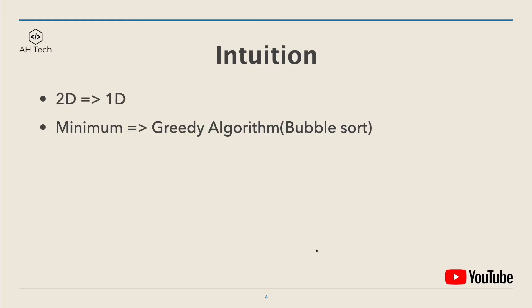The intuition to solve this problem is first, we have to try to transform the 2D matrix into a 1D array. And second, usually for questions to find minimum steps or minimum numbers, we can think of either dynamic programming, BFS, or greedy algorithm. In this case we have to use a greedy approach, and it's kind of like doing a bubble sort underneath the hood.